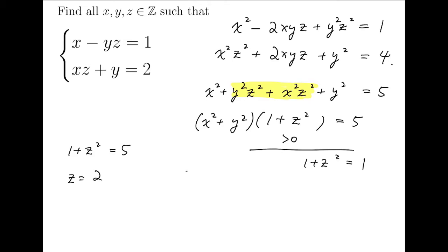and so z equals 2, or z equals minus 2. When z is 2, we do not consider the case that x squared plus y squared is 1. Instead, we put it back into the original equation. So x minus 2y equals 1, and 2x plus y is 2.